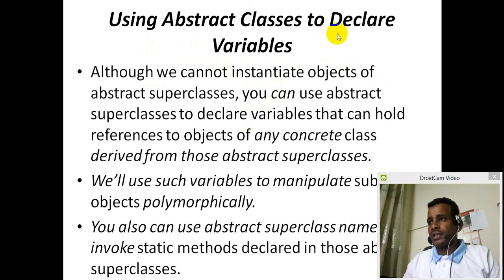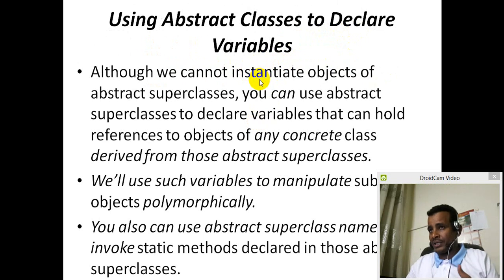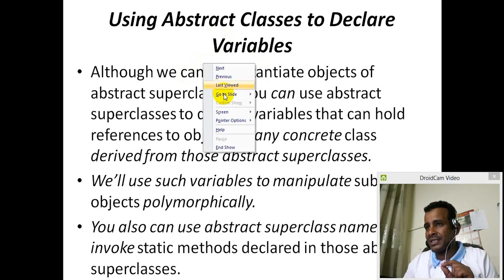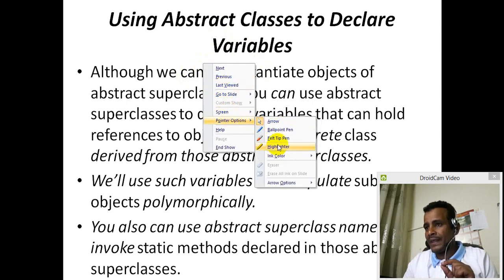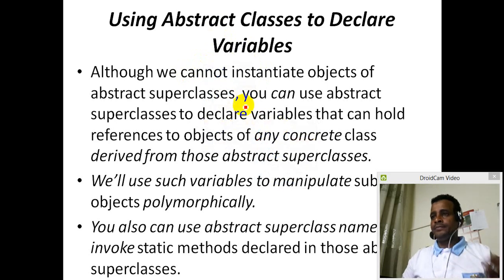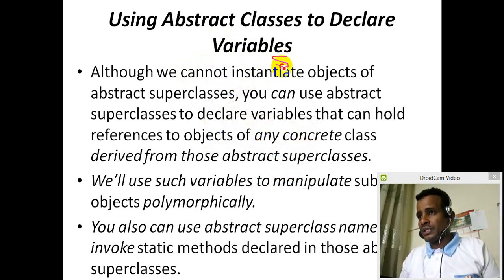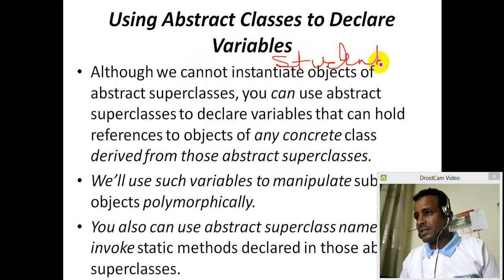Now, using abstract class to declare variables. The variables declare the matrix. Please don't misunderstand the idea — here in the subclass, we are trying to assign the abstract class to the class. The student is a class, or something else in the object.